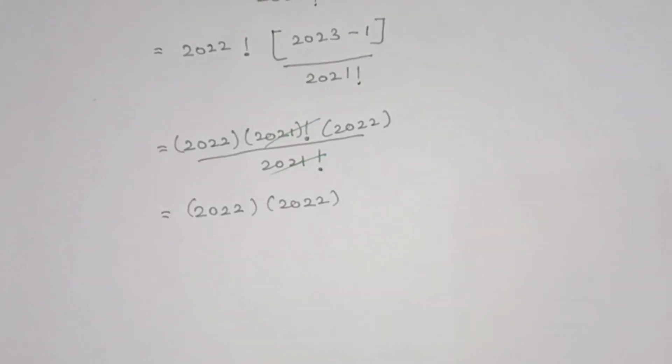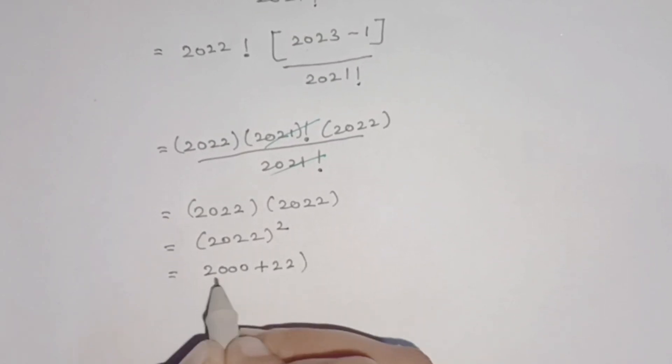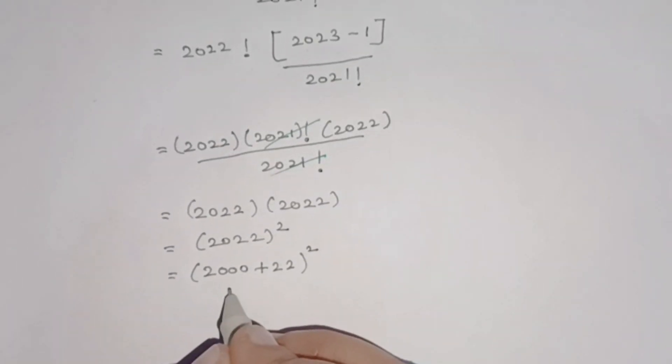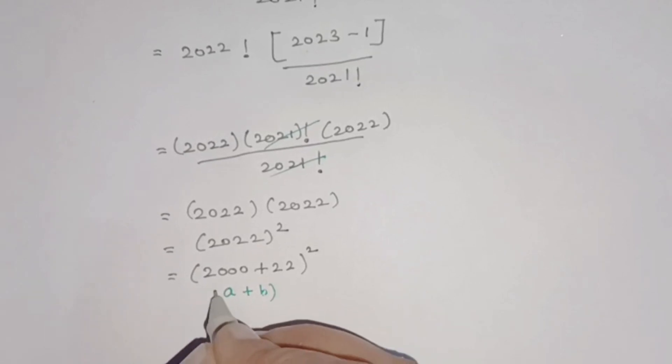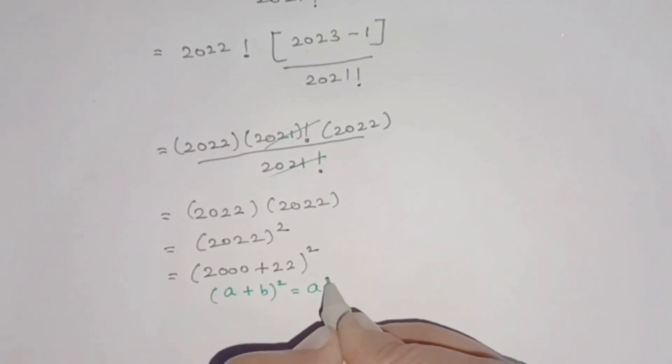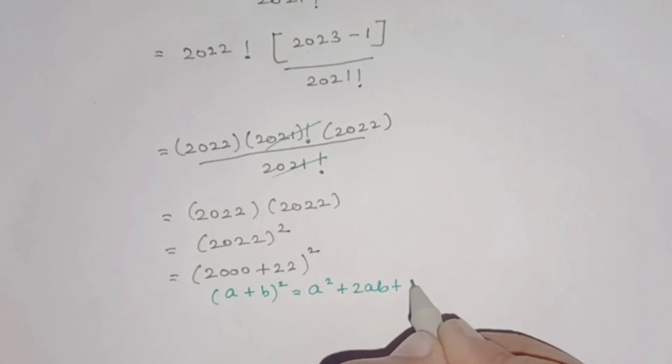This is 2022². Since we are not allowed to use a calculator, for simplification we can write 2022 as (2000 + 22)². This is in the form (a + b)², which equals a² + 2ab + b².